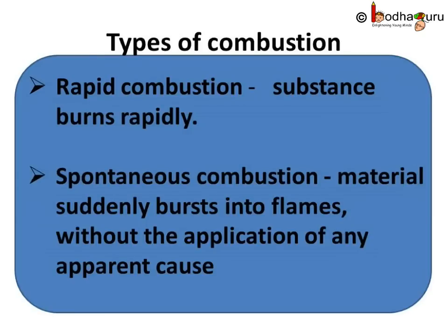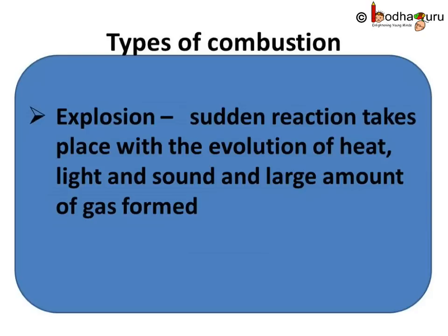To sum up what we learnt today — there are different types of combustion. Rapid combustion: the substance burns rapidly, for example when a gas lighter is brought near a gas stove after turning its knob on, the gas burns rapidly producing a lot of heat and light. Spontaneous combustion: the material suddenly bursts into flame without any apparent cause — for example, the burning of phosphorus at room temperature. Explosion: a sudden reaction takes place with evolution of heat, light, and sound, and a large amount of gas is formed — for example, burning crackers.